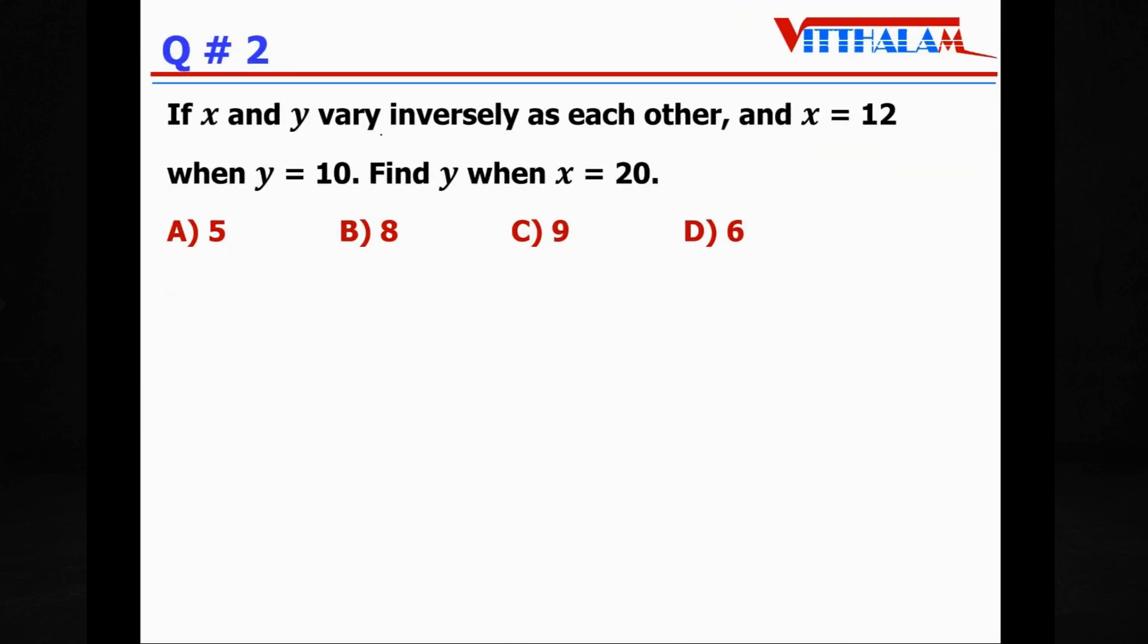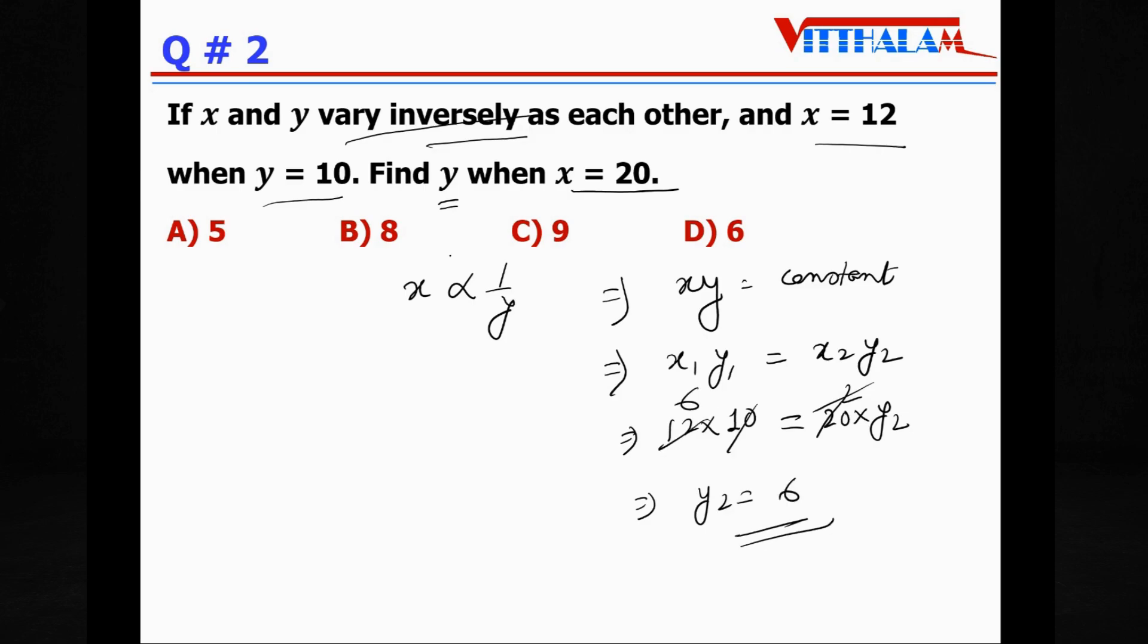Question 2: If x and y vary inversely as each other, and x = 12 when y = 10, find y when x = 20. So x is varying inversely, therefore x ∝ 1/y, that means their product remains constant. Therefore we can say x₁y₁ = x₂y₂. Now we have to find y₂ when x₂ = 20. x₁ is 12 and y₁ is 10. Therefore y₂ = (12 × 10)/20 = 6. Therefore answer is D.